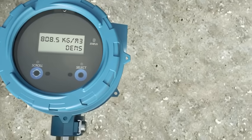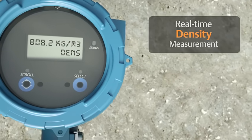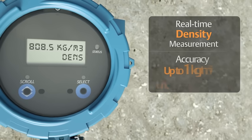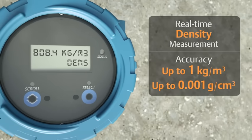As a result, the fork density meter is able to provide real-time density measurement with an accuracy up to one kilogram per cubic meter.